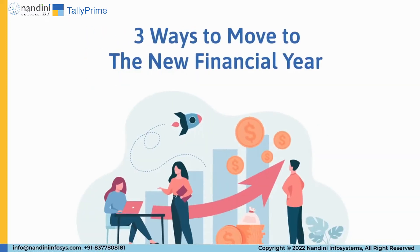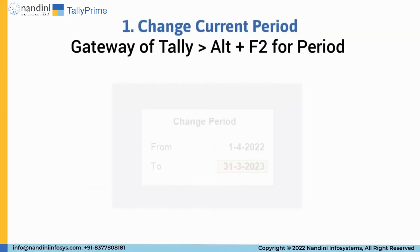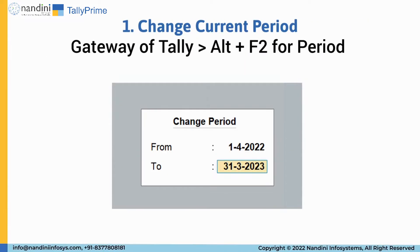Do you know how to move to the next financial year in Tally Prime? You want to quickly close the books of accounts for a financial year and move your company data to the next financial year. You can achieve this in multiple ways in Tally Prime. First is change current period. To move your data to the new financial year, change the current period. Go to Gateway of Tally and press Alt+F2 and enter the dates.